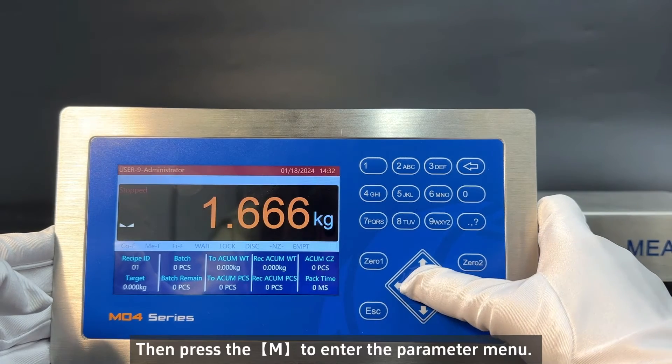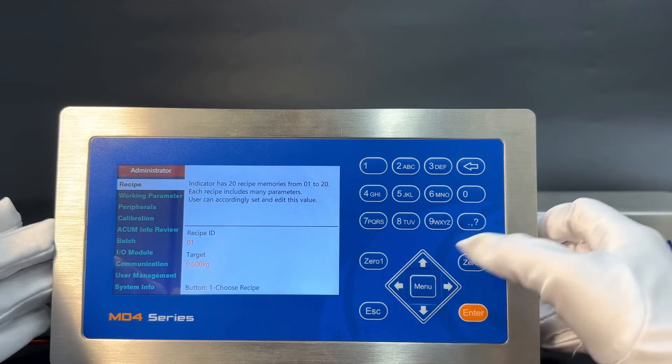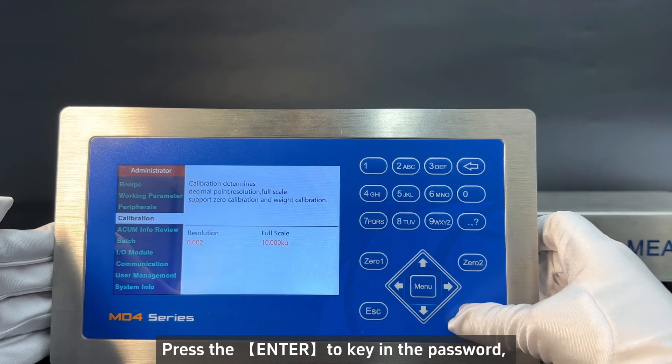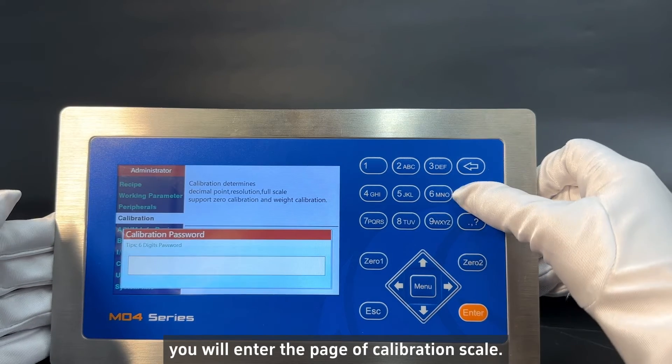Then press the M to enter the parameter menu. The calibration can be found in the left column. Press the enter to key in the password. You will enter the page of calibration scale.